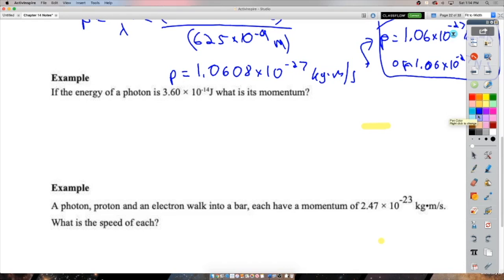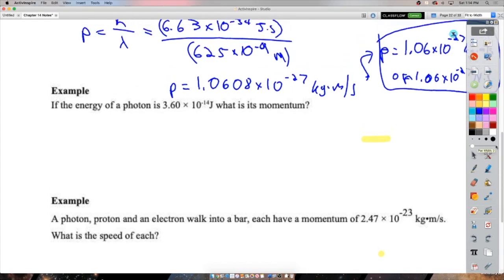So look at these examples here, starting on page 23. We'll go through the examples related to the Compton effect, or more generally to the momentum of a photon, at least at the beginning here.